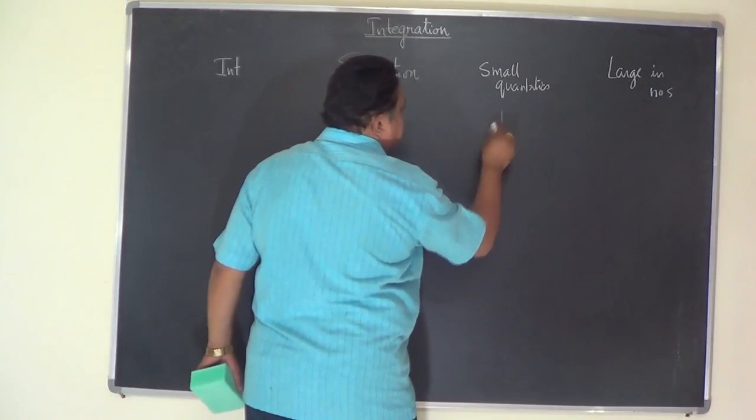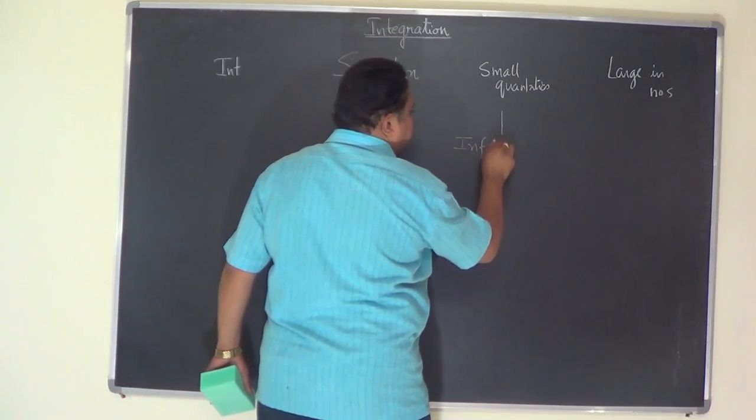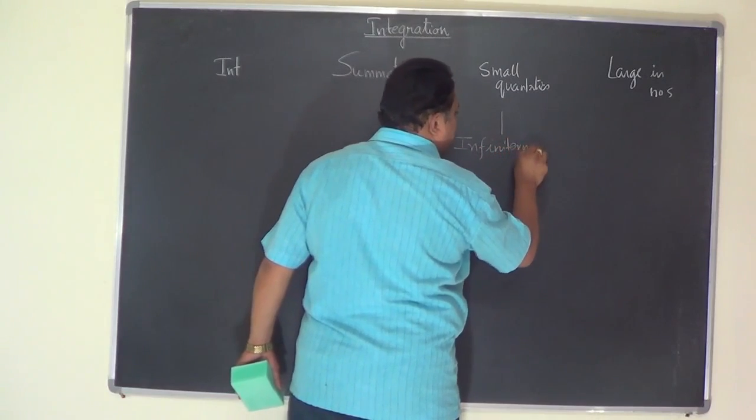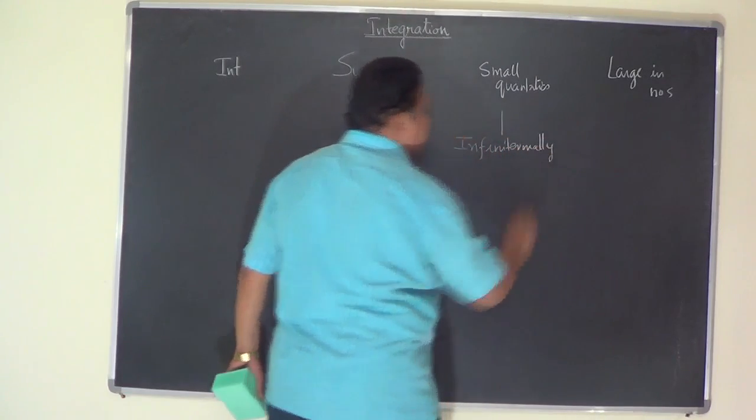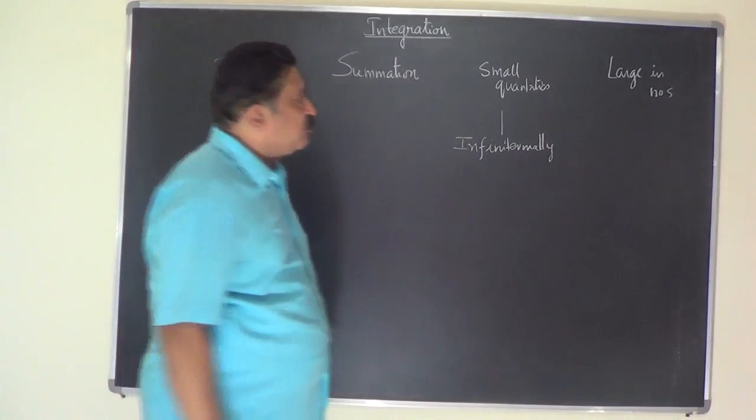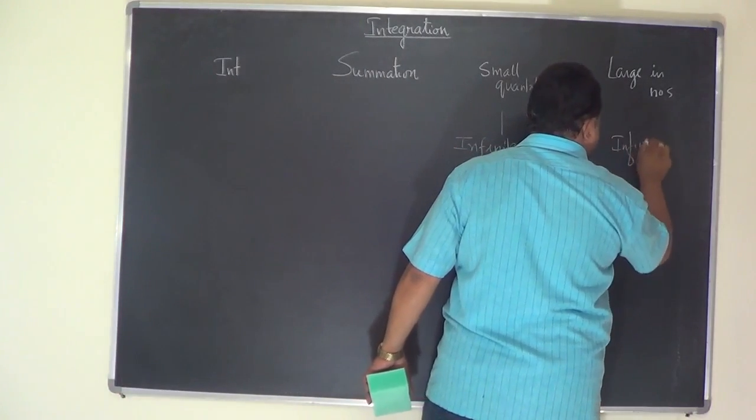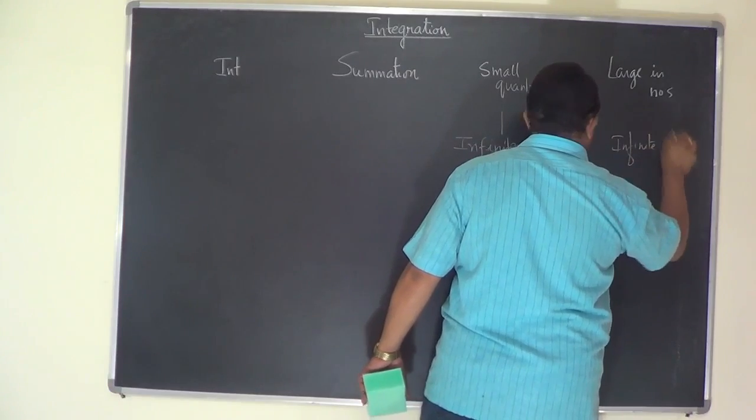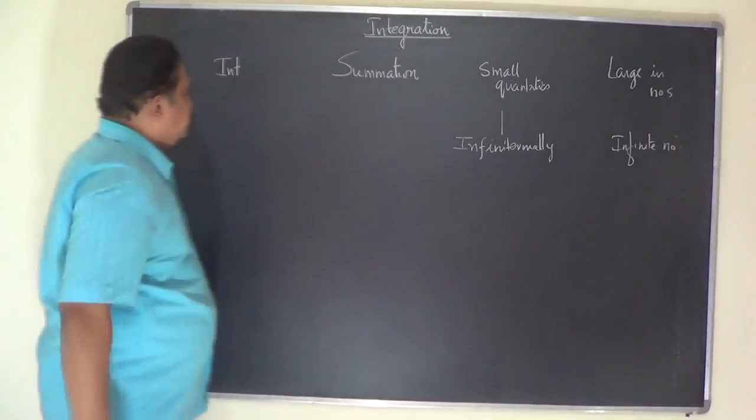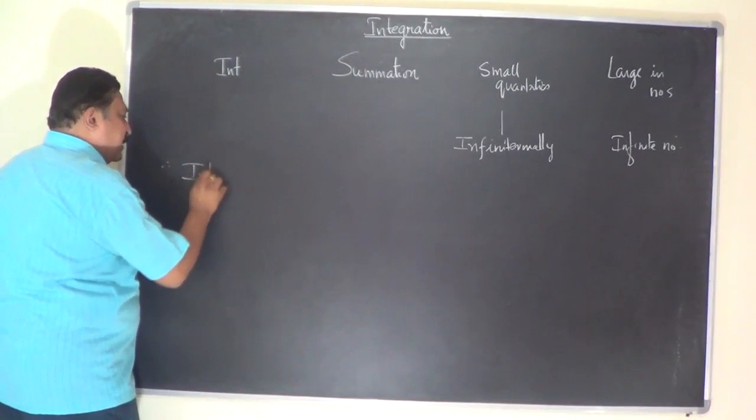Small quantities are also called infinitesimally small. How small are they? They are infinitesimally small that means very very small and these quantities are present in large numbers that say infinite numbers.